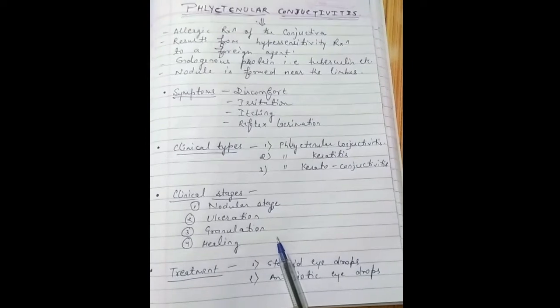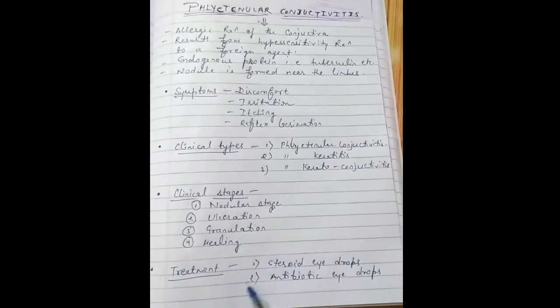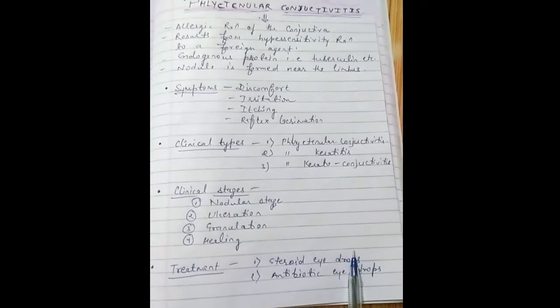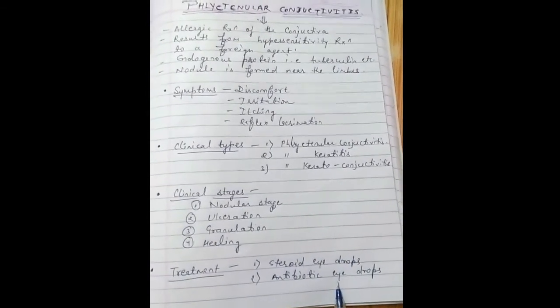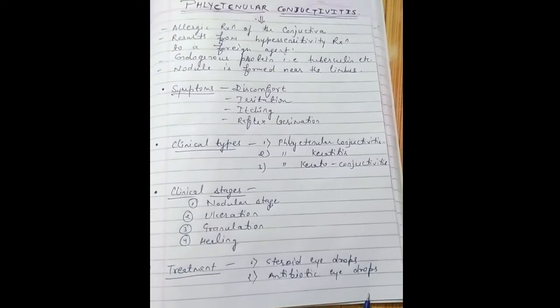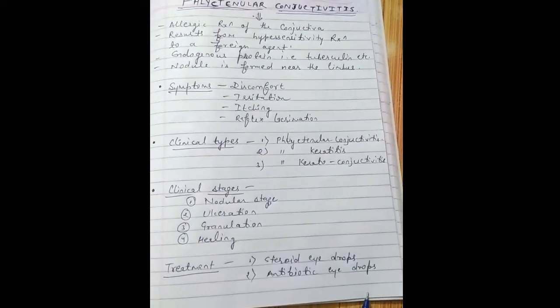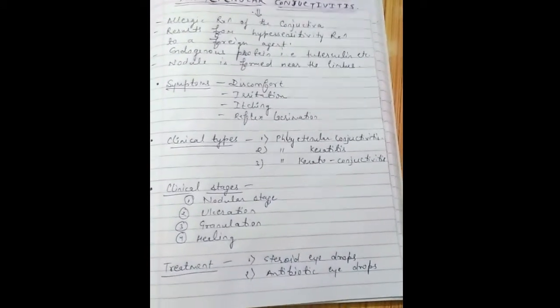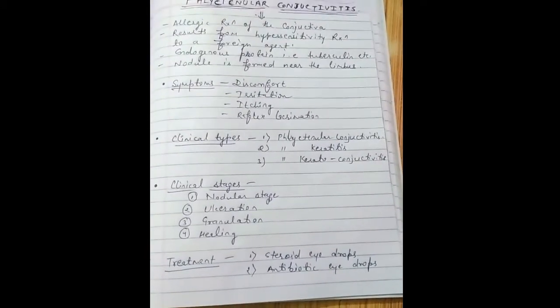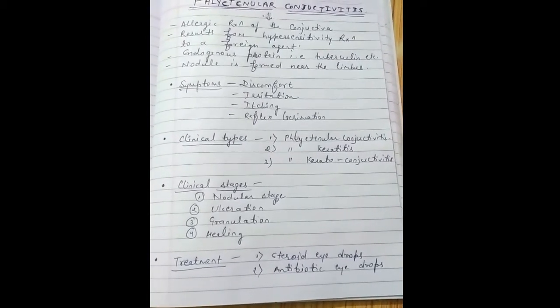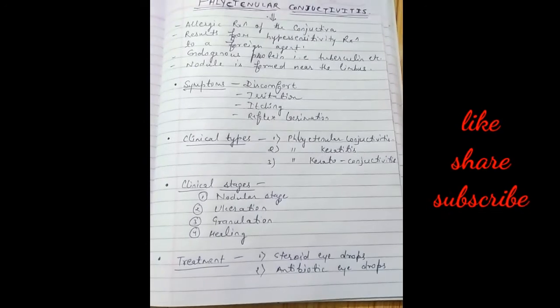Now we talk about the treatment. Treatment includes steroid eye drops like cyclosporine, antibiotic eye drops, and we can treat the underlying cause like tuberculosis. We should also improve hygienic conditions, and this can be treated.